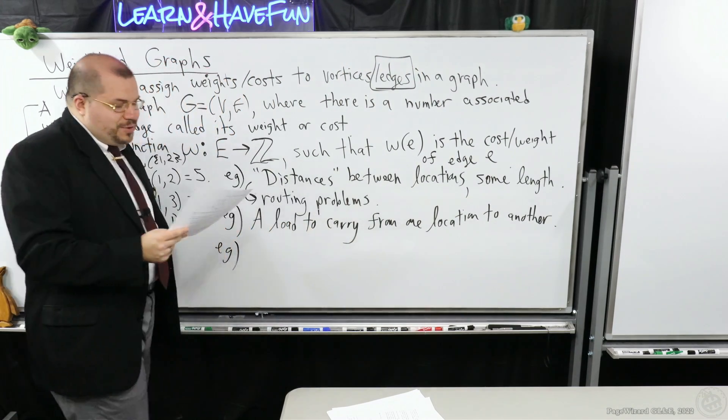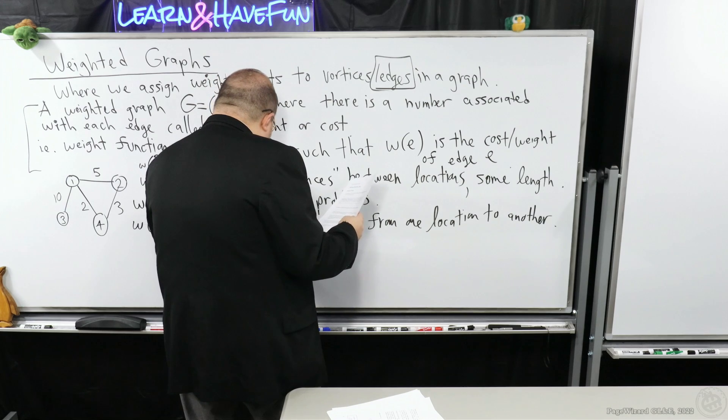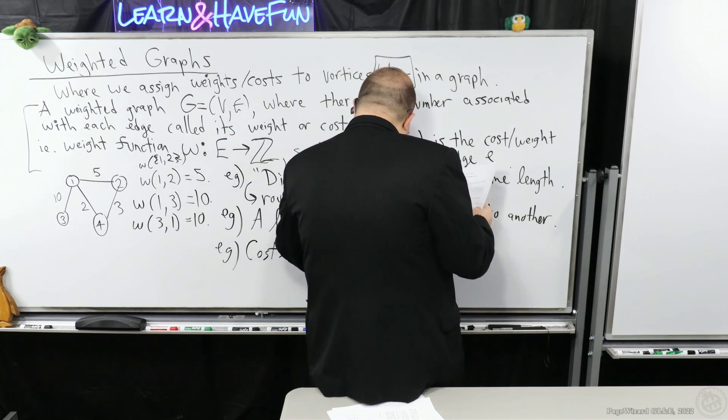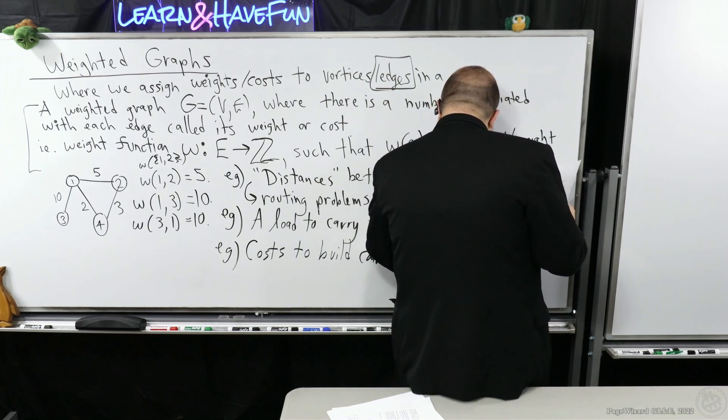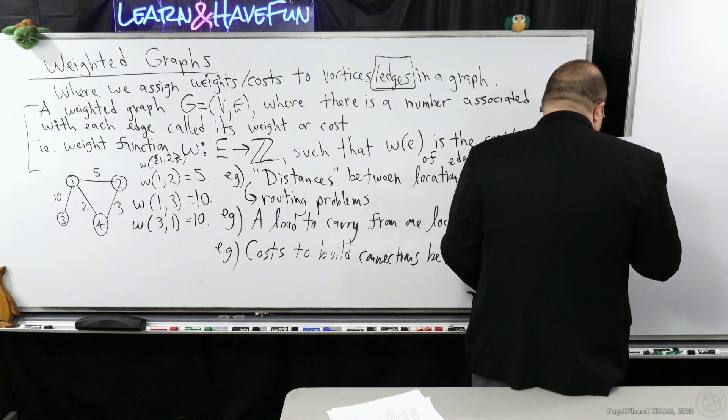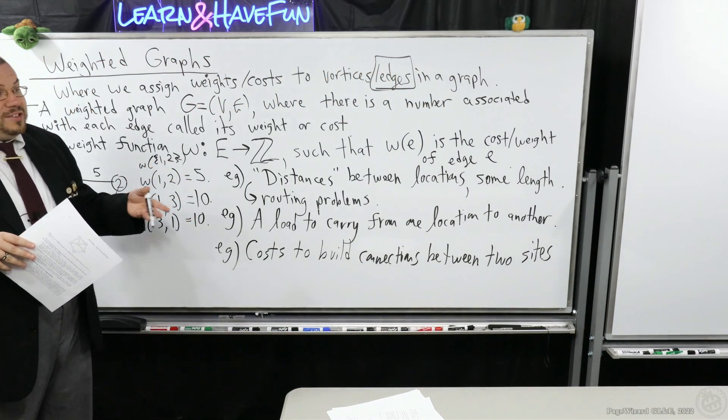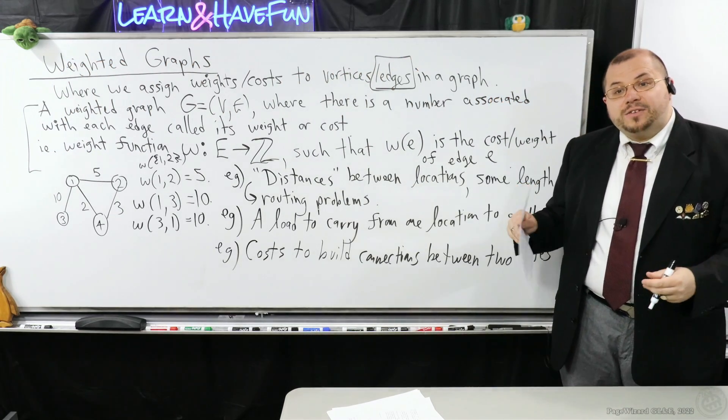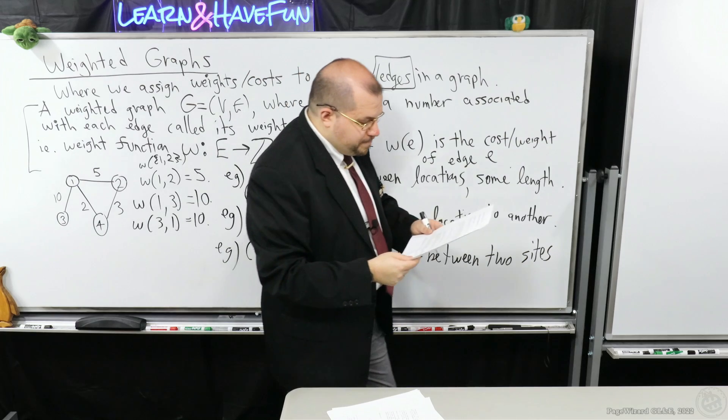Another way you can also imagine these things is as costs for manufacturing or building. It might even be the costs to build connections, build connections between two sites, and I mean like physical sites. You can imagine the sites being vertices in this graph. And the connections that are possible, suppose that these are plans, and you have to decide which subset of those edges, which are going to be connections between your sites, which ones you're going to build. The edge weights would represent the costs on those.